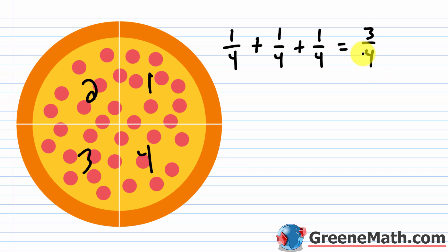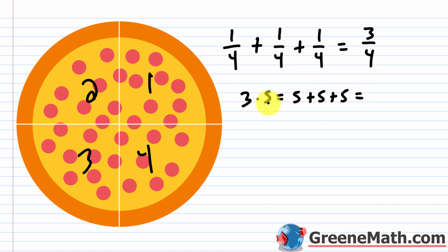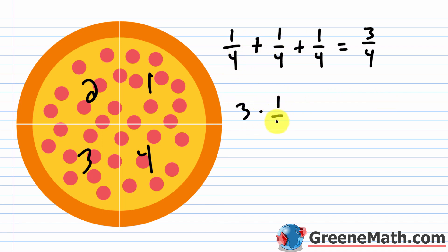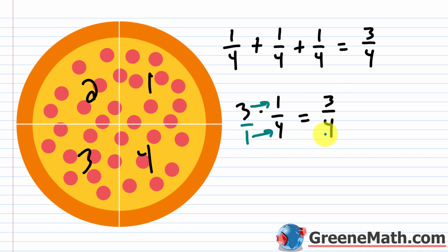Now we can transform this into a related multiplication statement. Just like three times five equals five plus five plus five, we can write this as three times one-fourth equals three-fourths. You can write three as three over one, then multiply numerators: three times one equals three. Put that over the product of denominators: one times four equals four. That gives three-fourths.